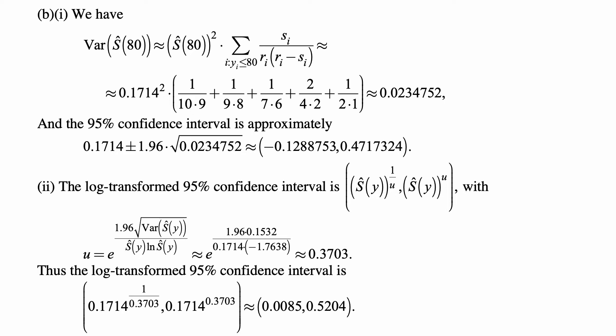And the 95% confidence interval is approximately the expected value we calculated, 0.1714 plus or minus 1.96, the percentile of the standard normal distribution, multiplied by the square root of the variance, and that's approximately from -0.1288753 to 0.4717324.